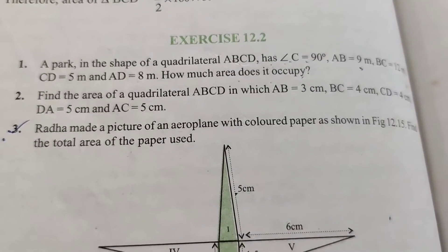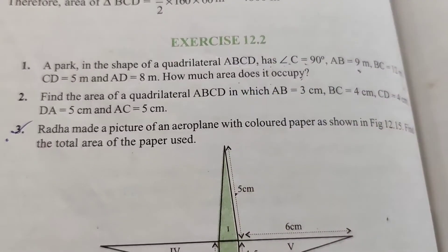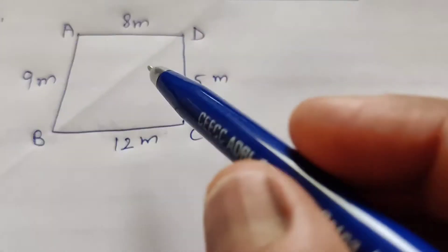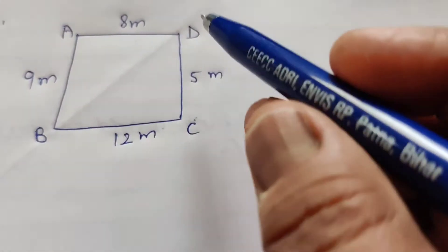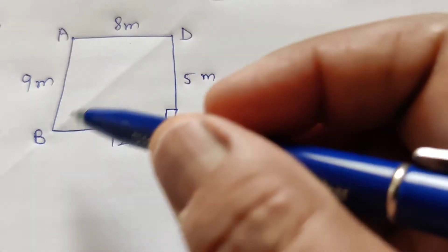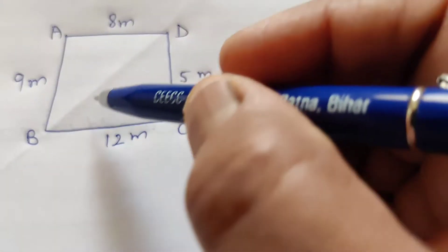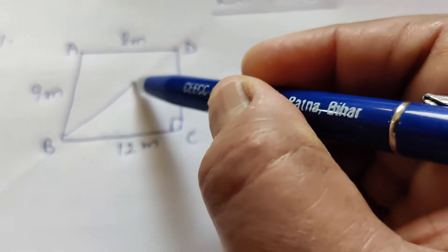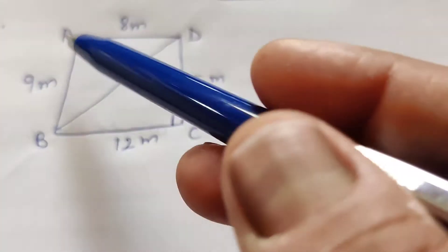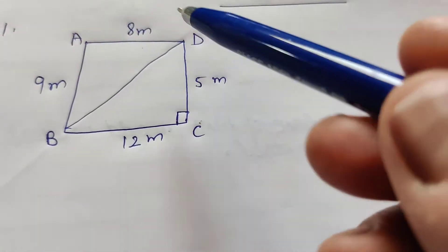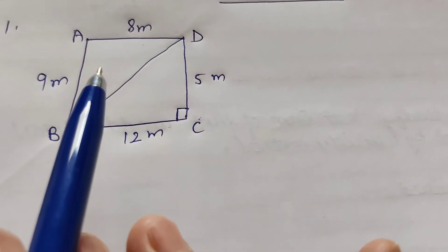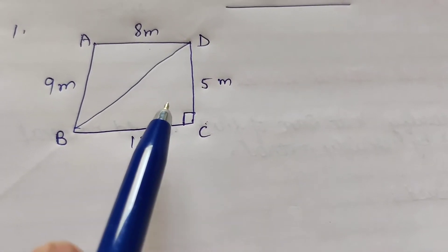We have to find the area of quadrilateral ABCD. This is figure ABCD with angle C equal to 90 degrees. First, we join BD. Here are two triangles: ABD and triangle BCD. First, we find the area of triangle BCD.